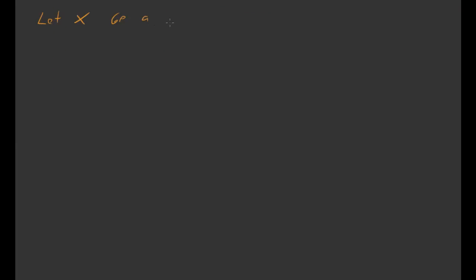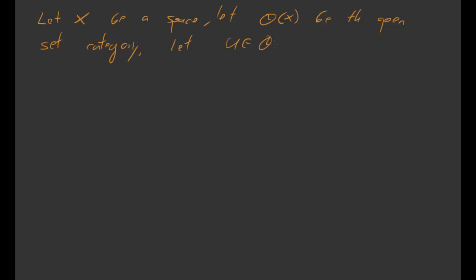Now let me say what an external sieve is. Again, we'll let X be a space, O(X) be the open set category, and U be an object of O(X), so U is an open subset of X. To motivate this definition, let me recall some things about the Yoneda embedding. We have this open set category O(X), and there's an embedding from this category into the category of functors — the hom-set category in the category of cats — from O(X) opposite into the category of sets. This is also known as the category of set-valued presheaves on X.